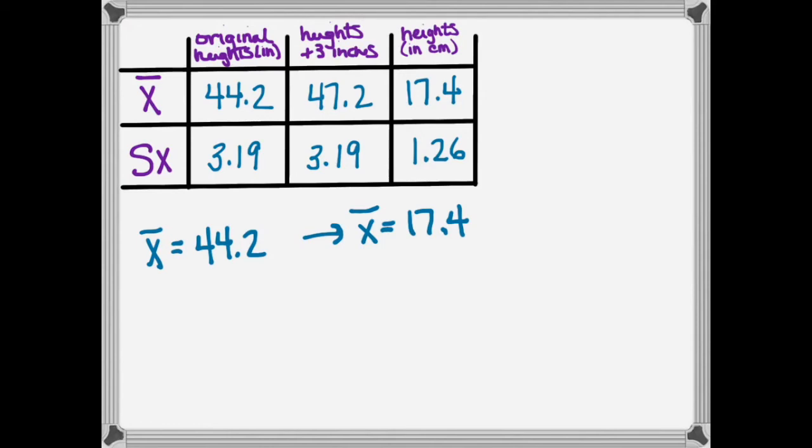Let's see if that'll help me here. If I take 44.2 and divide it by 2.54, that's going to give me 17.4.